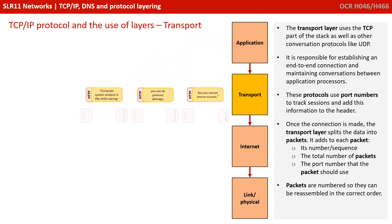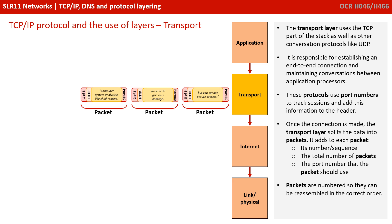The message and header combined is called a segment, and we pass it down to the transport layer. This is where we use the TCP protocol and other conversation protocols like UDP. It's responsible for establishing an end-to-end connection and maintaining conversations between application processes. These protocols use port numbers to track sessions, so we add this information to the header. Once the connection is made, the transport layer splits the data into separate packets, and to each packet it adds a sequence number, the total number of packets, and the port number the packet should use. The packets are numbered so they can be reassembled in the correct order at the other end, because packets can arrive out of sequence.